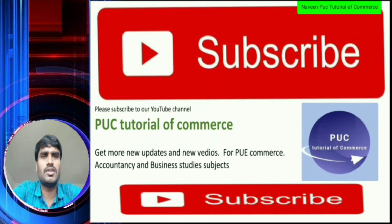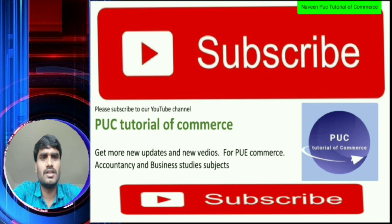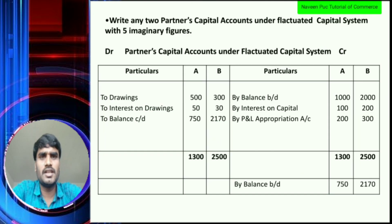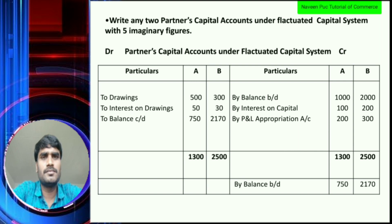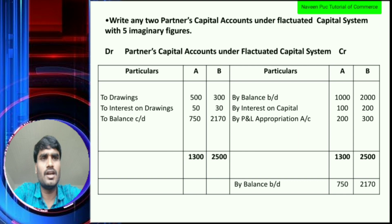Subscribe to our YouTube channel — this video will be updated. So let's start the class. The question is: write any two partners' capital accounts under the Fluctuating Capital System with 5 imaginary figures.